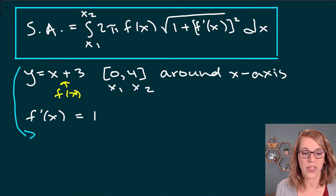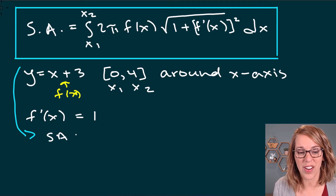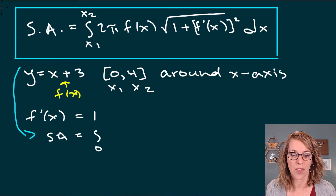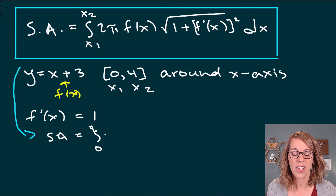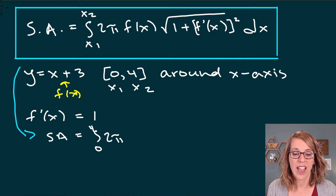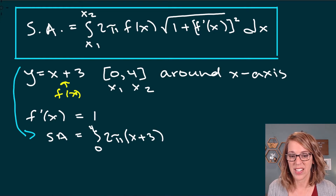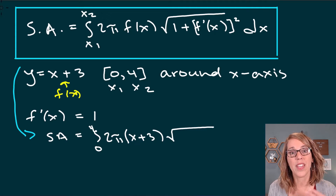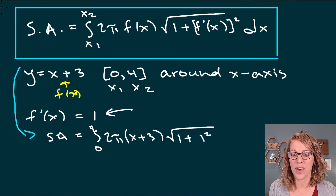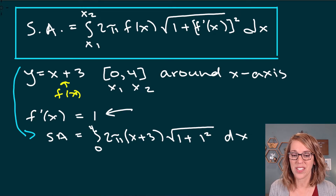Our surface area is equal to the integral along the x interval from 0 to 4, of 2π — which I could bring out in front — times f of x, which is x plus 3, times the square root of 1 plus the derivative of my function squared, which is 1 squared, then dx.